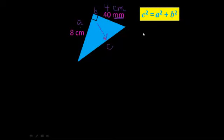Okay, so let's work it out. C squared is equal to A squared. So A is equal to eight plus B squared. B is equal to four centimeters because we're working in centimeters.